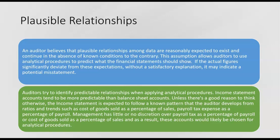An auditor believes that plausible relationships among data are reasonably expected to exist and continue in the absence of known conditions to the contrary. This assumption allows auditors to use analytical procedures to predict what the financial statements should show, and if the actual figures significantly deviate from these expectations without a satisfactory explanation, it may indicate a potential misstatement. Auditors try to identify predictable relationships when applying analytical procedures.